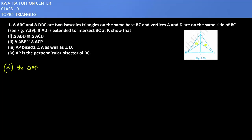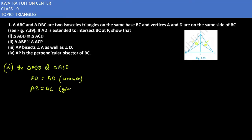In triangle ABD and triangle ACD, we can see that AD is equal to AD, which is common in both triangles. Since triangle ABC is an isosceles triangle, AB is equal to AC — this is given. Also, BD is equal to DC — this is also given. So by SSS congruency, triangle ABD is congruent to triangle ACD.